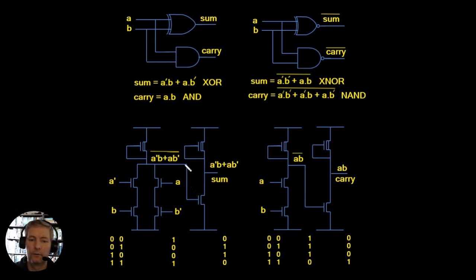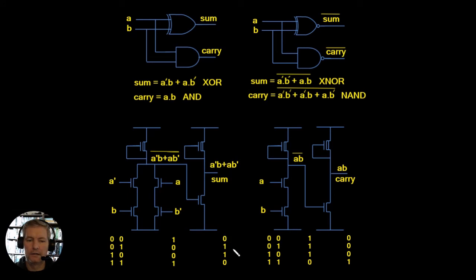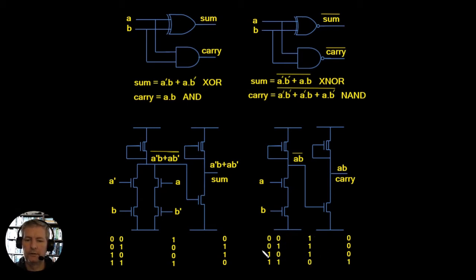By putting the XNOR output through an inverter we get back to the function A·B' + A'·B, which is our exclusive OR — our sum. We can work through similarly to get the AND function: we generate the NAND and put it through an inverter to get the AND. The truth table for these has been drawn out as well.